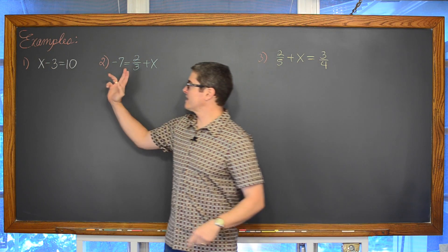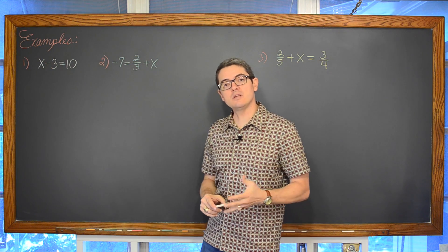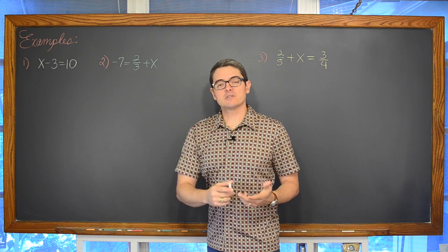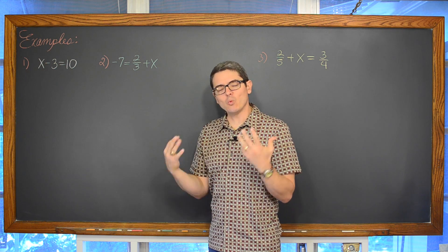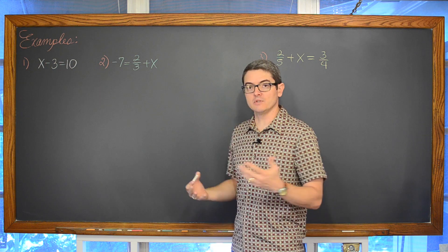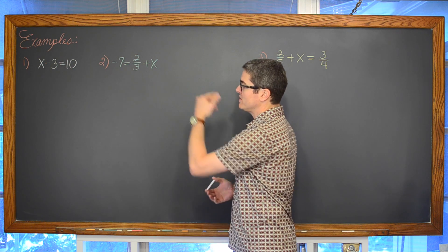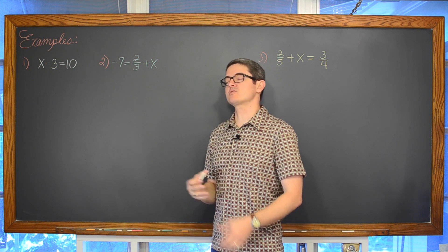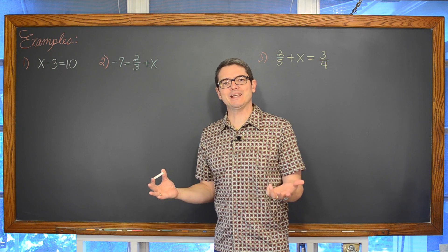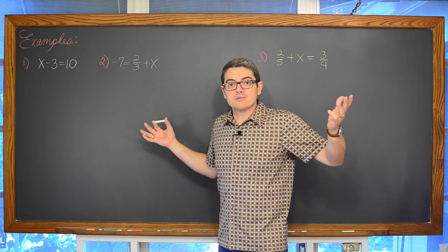Alright then, for our first example we have got x - 3 is equal to 10. Now in the previous lesson where we introduced what an equation was, this would be an example where we would have done it with mental math. What minus 3 is equal to 10? Well I know it is 13 so the answer is 13.